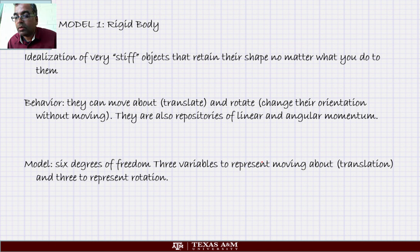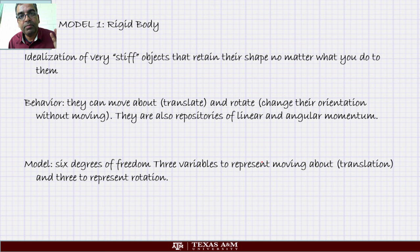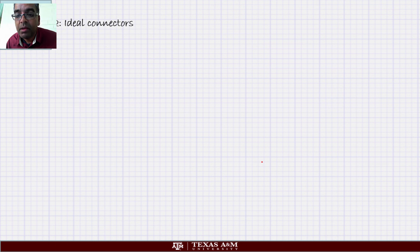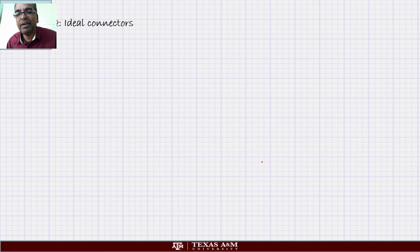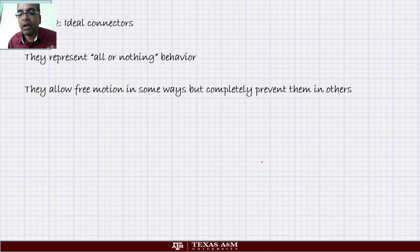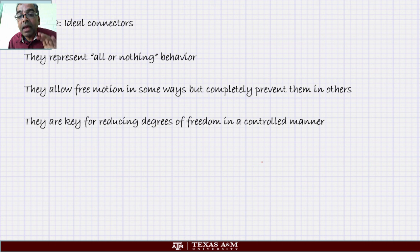To summarize rigid bodies: three translational variables — surge, heave, and sway — and three rotations — roll, pitch, and yaw — giving six degrees of freedom. That's model number one. Model number two is ideal connectors, things like pin joints. These represent all-or-nothing behavior: they allow free motion in some directions but completely prevent it in others. They are key for reducing degrees of freedom in a controlled manner and we use them all the time for building all kinds of things.